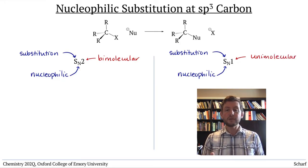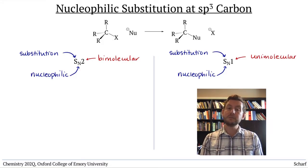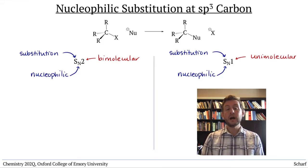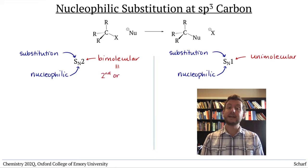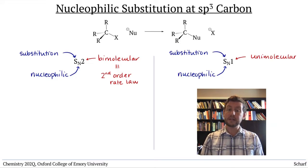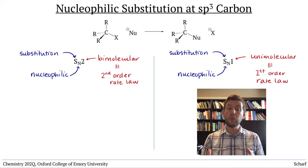You're already familiar with the first two terms, and the molecularity of a reaction is determined from kinetic data, that is, rate laws. A bimolecular reaction has a second order rate law, meaning two molecules are involved in the rate determining step. A unimolecular reaction has a first order rate law. Only one molecule is involved in the rate determining step.